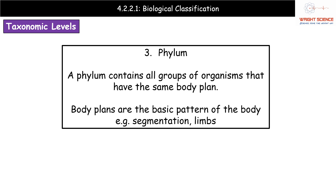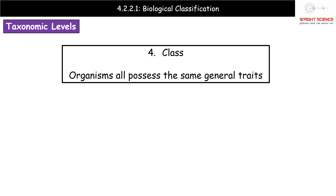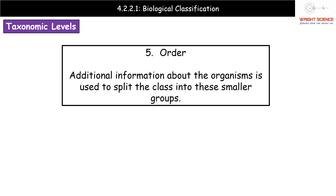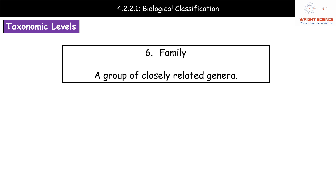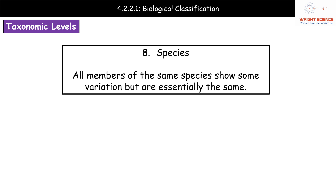We then come to the phylum, which is a group of organisms that all share the same body plan — giving the basic pattern of the body, such as the amount of segmentation and number of limbs. Next is the class, where organisms share the same general traits. Then the order, splitting into smaller groups using additional information. Family comes next, consisting of closely related genera. Genus contains closely related species. Finally, species is our last taxonomic level.